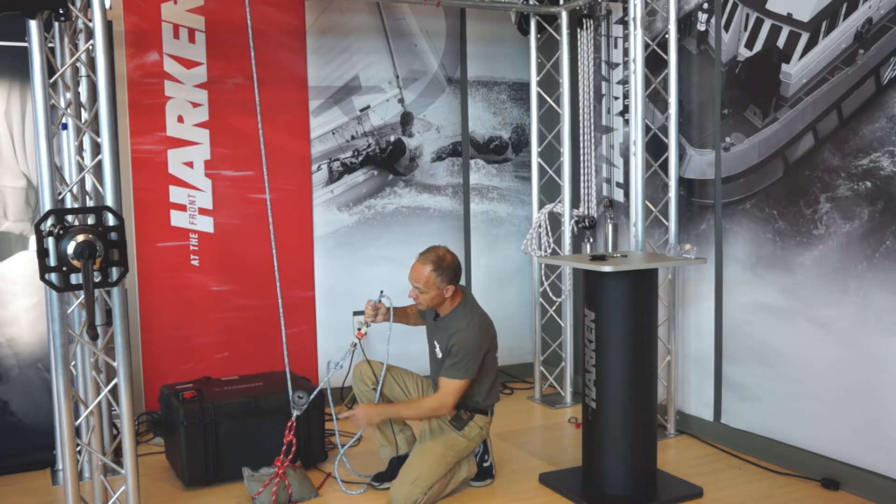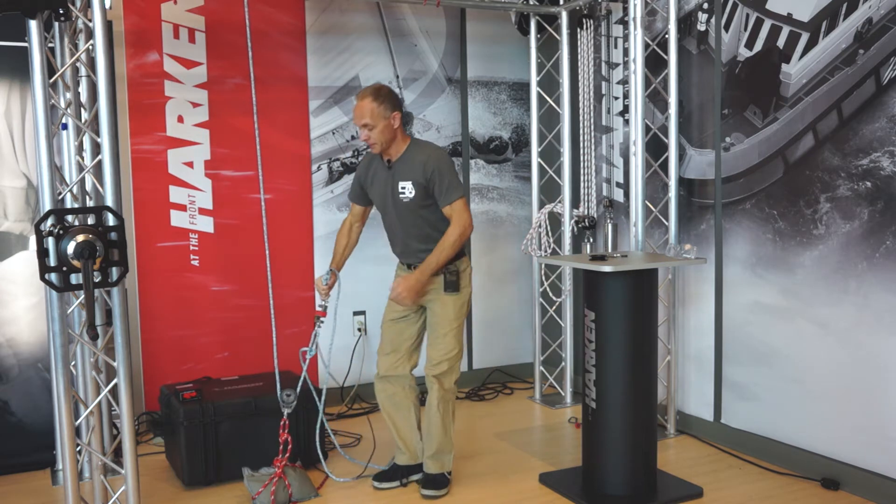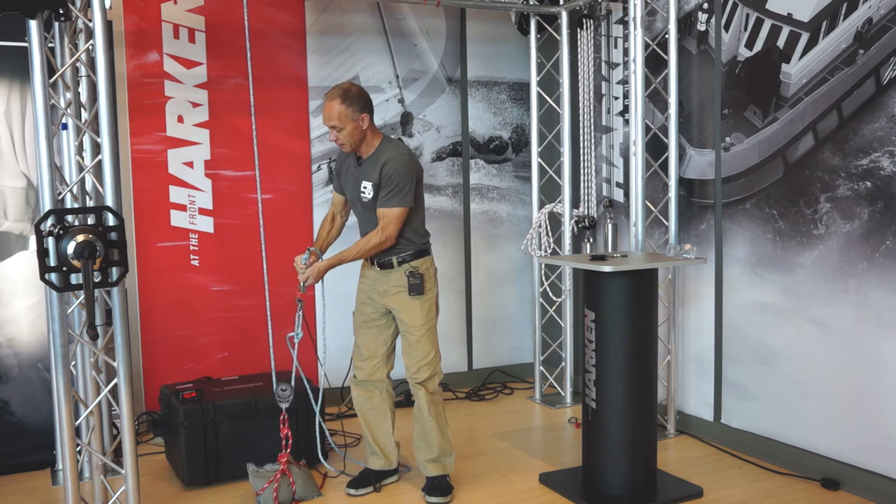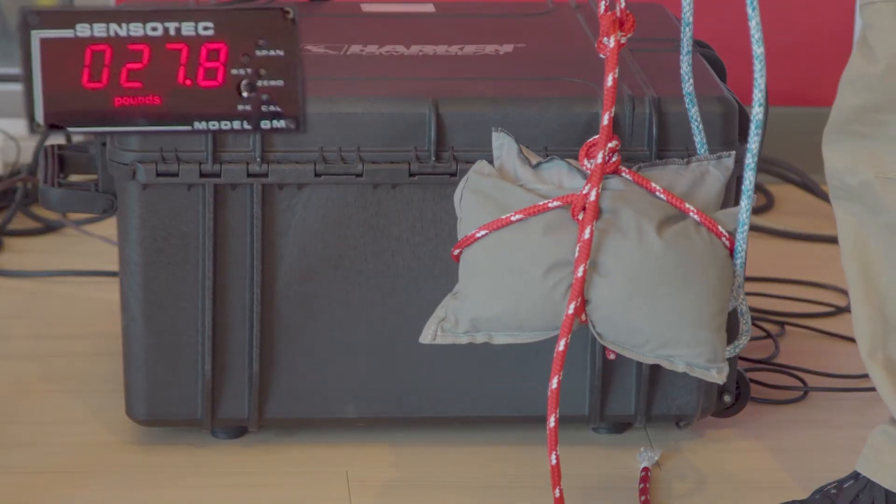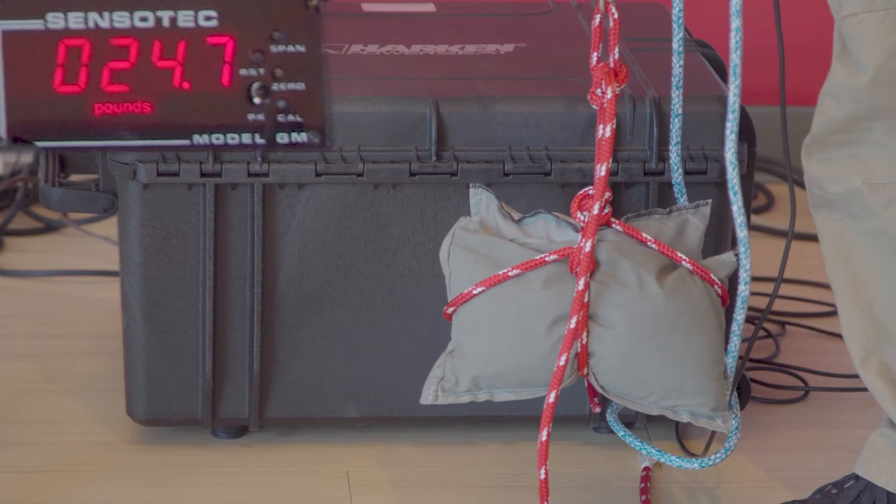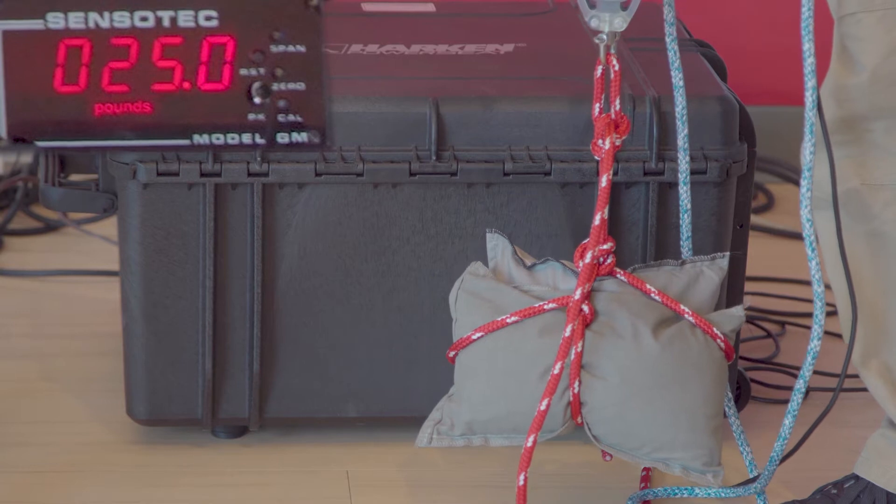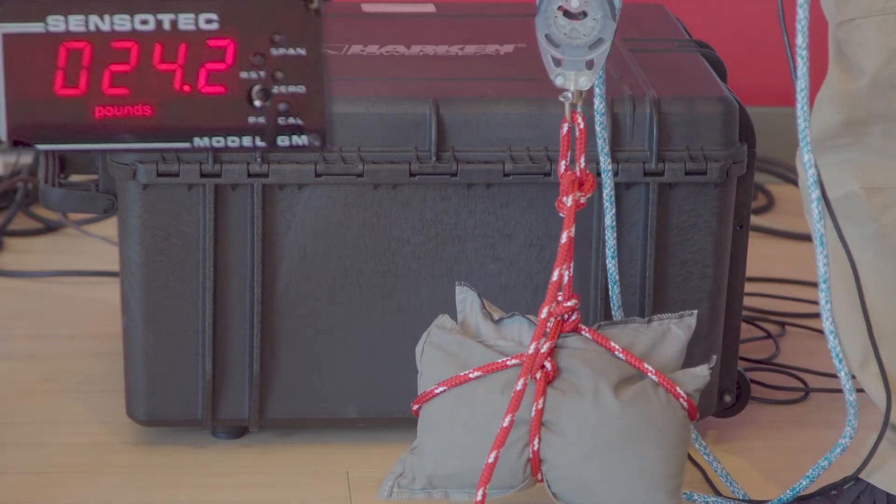So with the ratchet off on the ratchet block, when I trim I'm getting about 27 pounds, a little bit over half the load which is to be expected. And when I ease it's about the same. 26 trimming, 25 easing.